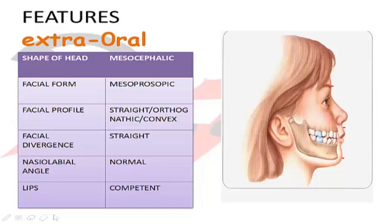For facial divergence, you join the soft tissue glabella and the soft tissue chin or soft tissue gonion. If this line is straight, it will be straight in Class 1 malocclusions. It can be anterior or posterior divergence depending on the malocclusion, which we will study in coming slides.